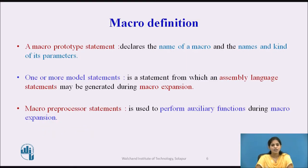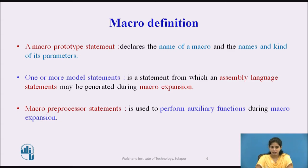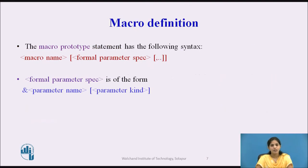The first is the macro prototype statement, which declares the name of the macro and the names and kinds of parameters. The next is the model statement, which is a statement from which assembly language statements are generated during macro expansion. The third type is the macro preprocessor statement, which is used to perform auxiliary functions during macro expansion.